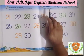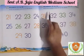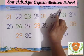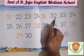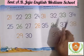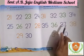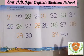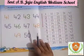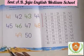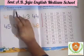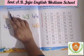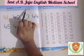Now page number 33 — numbers 31 to 40. Read the numbers from 31 to 40 aloud: 31, 32, 33, 34, 35, 36, 37, 38, 39, 40.